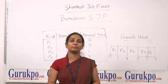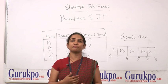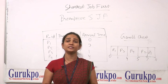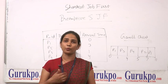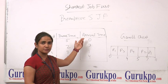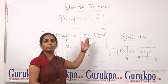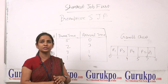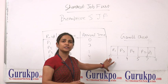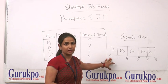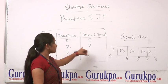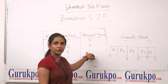Now, how will these processes be scheduled on the basis of preemptive scheduling? The process will be snatched, meaning it will complete its execution in more than one interval of time. The arrival time of process P1 is 0, so the processor will first be allocated to P1. P1 will use the processor until another process arrives in the ready queue. The next process to arrive is P3.